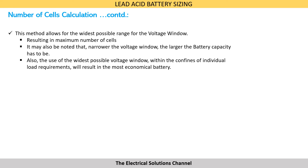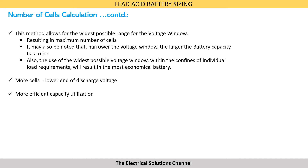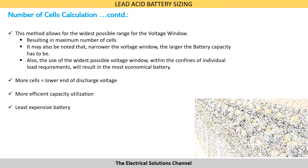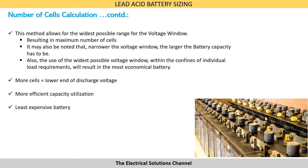This results in the maximum number of cells. It may also be noted that narrower the voltage window, larger the battery capacity has to be. Also, the use of the widest possible voltage window within the confines of individual load requirements results in the most economical battery. More number of cells result in a lower end of discharge voltage, allowing for more efficient capacity utilization and the least expensive battery.